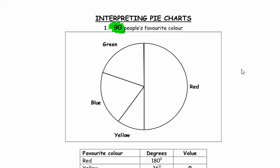So what this worksheet is about now is showing you how you can go from the angle to the number of people. We've got some calculations to do. Question one on your sheet — let's work through it and then I'll see whether you can do the others. Important: 90 people, favourite colour.